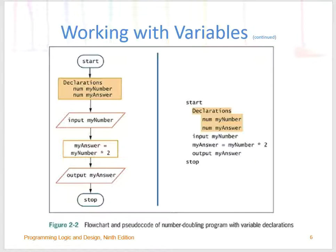Sometimes my number holds two and it can also hold four, and other times my number holds six and my answer holds twelve. The ability of variables to change in value is what makes computers and programming worthwhile. Because one location can be used repeatedly with different values, you could write program instructions once and then use them for thousands of separate calculations.